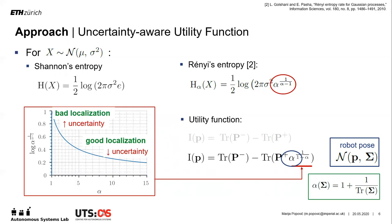This is achieved using a simple relationship coupling alpha to the pose covariance matrix trace. The takeaway is that this formulation allows the robot to adaptively trade off between exploiting the known map to stay well localized and exploring unknown areas.